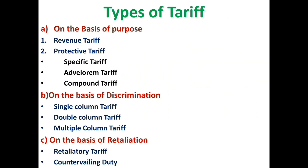Moving to the second classification, that is on the basis of discrimination. If a uniform rate of tariff is imposed on all similar commodities irrespective of the country of origin, it is known as the single column tariff — a non-discriminatory tariff. On the other hand, if two different rates of tariff exist for the same or similar commodity, we have a double column tariff. If more than two rates exist, we have a multiple column tariff.